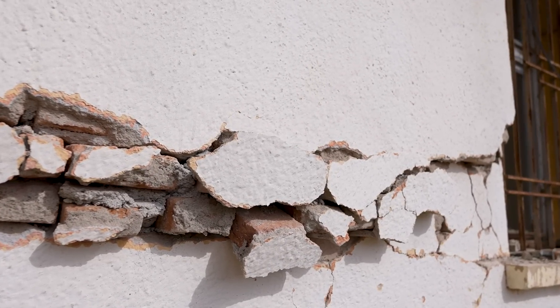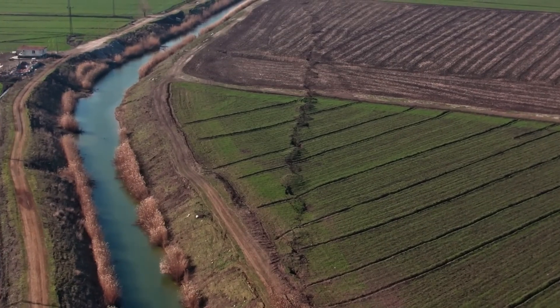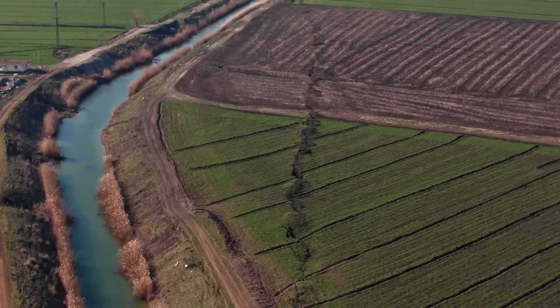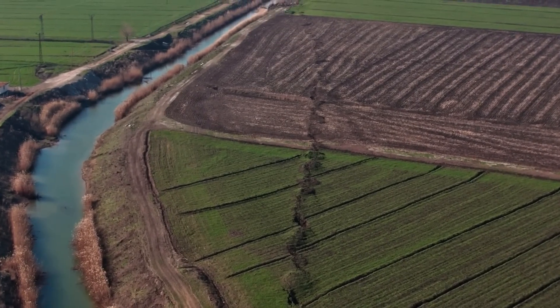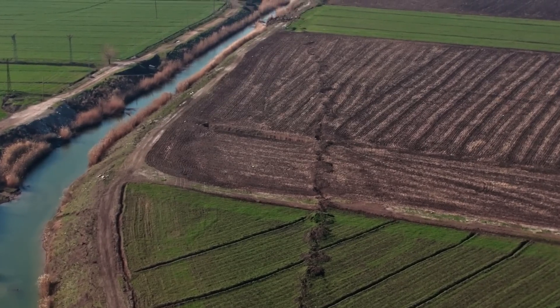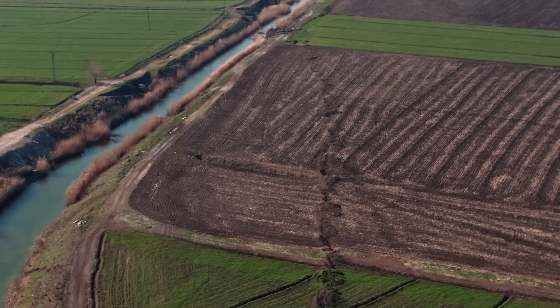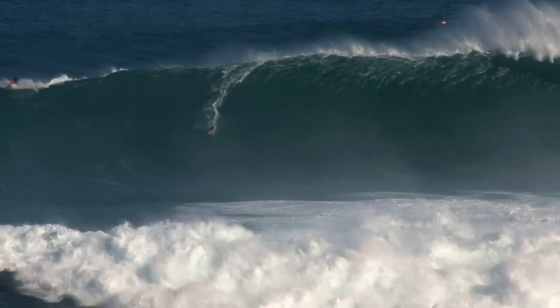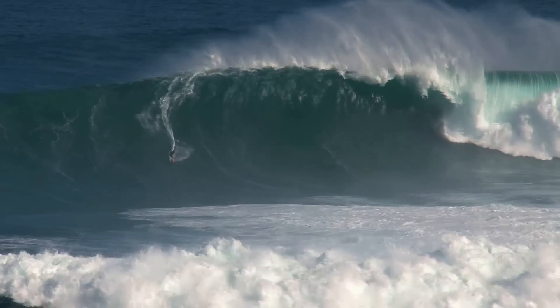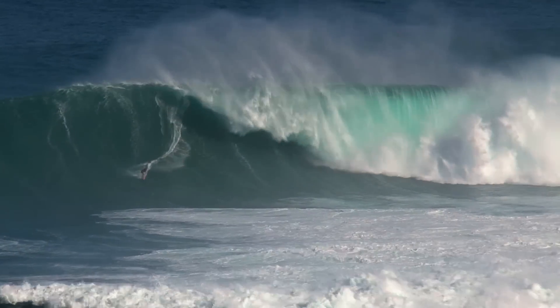Measuring 9.0 on the magnitude scale, this Cascadia megathrust earthquake rocked the Cascadia subduction zone, the area where the Juan de Fuca tectonic plate meets the North American plate. The violent shaking sent shockwaves reverberating across hundreds of kilometers, triggering a series of towering tsunamis that crashed ashore with incredible force.